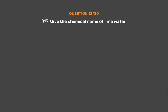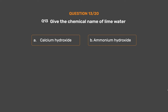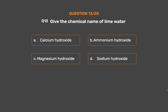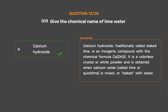Question number 13. Give the chemical name of lime water. Option A: Calcium hydroxide. Option B: Ammonium hydroxide. Option C: Magnesium hydroxide. Option D: Sodium hydroxide. The correct answer is Calcium hydroxide, traditionally called slaked lime. It is an inorganic compound with the chemical formula CaO2. It is obtained when calcium oxide, called lime or quick lime, is mixed or slaked with water.